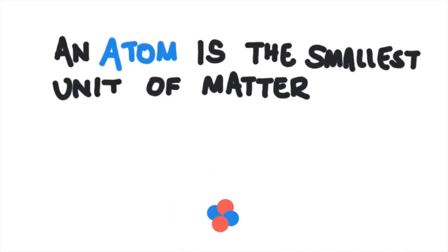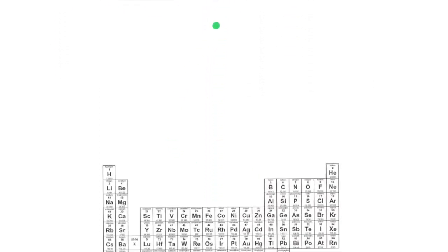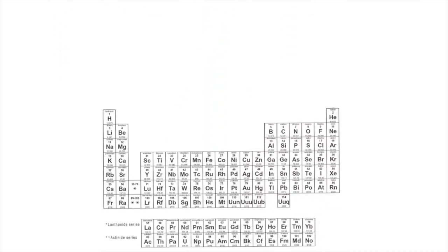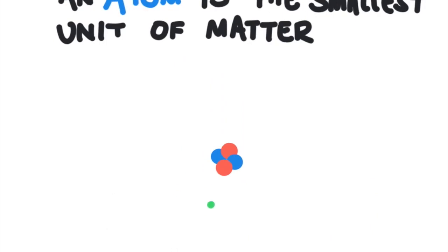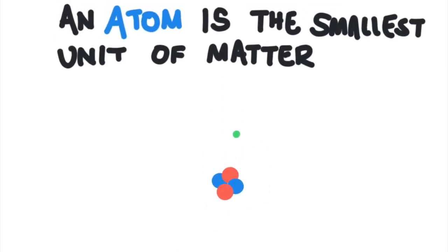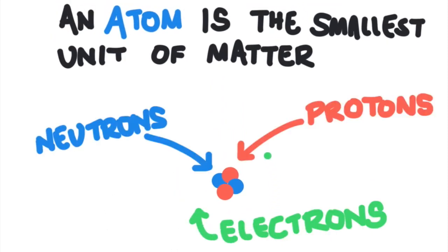The atom is the smallest unit of matter. There are a lot of different kinds of atoms, and each square on the periodic table represents a different one. We call them elements. An atom is composed of three subatomic particles called protons, neutrons, and electrons. Protons and neutrons are located in the dense center of the atom called the nucleus, and the electrons are buzzing around the outside of the nucleus.